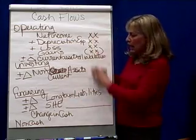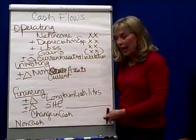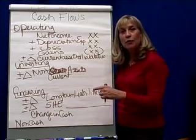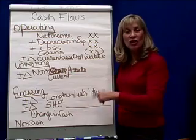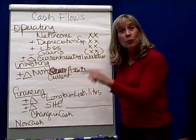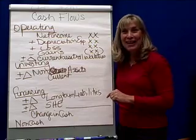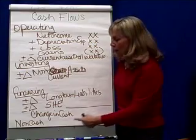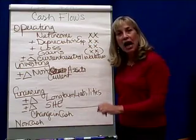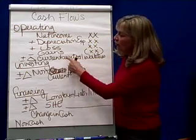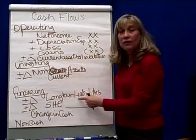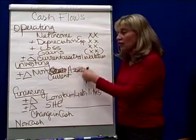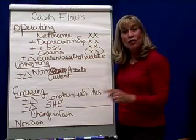Adding and subtracting accordingly will give us our change in cash. And you'll know if you got this right from the beginning, because the change in cash is nothing more than the difference between your beginning cash balance and your ending cash balance on the balance sheet. The final thing you have to disclose is any non-cash changes that flip items from investing to financing or financing to investing. Since no cash came in or went out but you changed these categories, you have to disclose it. So that's an overview.